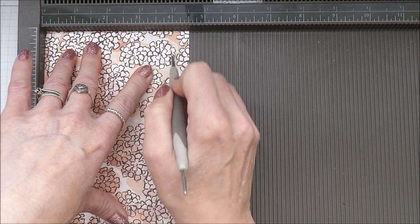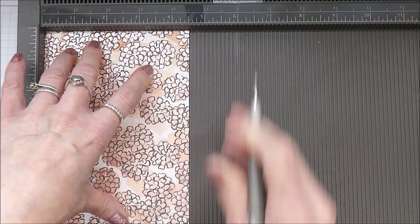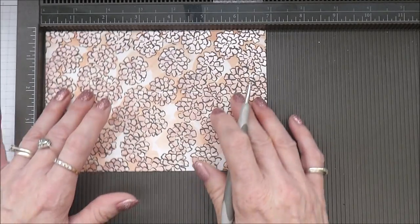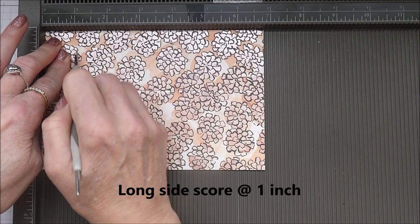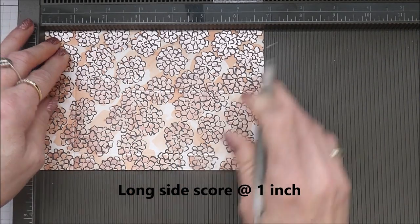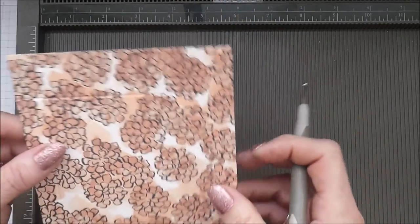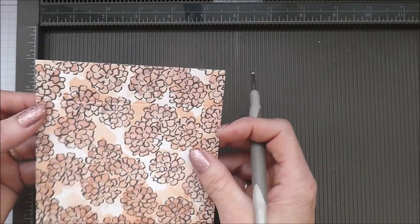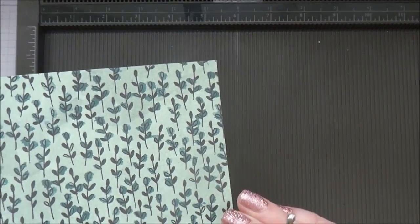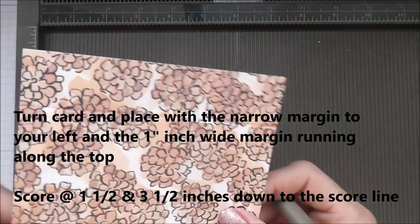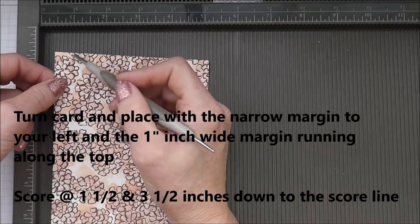And at four. And then you're going to flip it round. And on the long side, you're going to score at one inch. So now I'm turning it again. That half inch margin, which we scored over here at four inches, that's now coming over here.